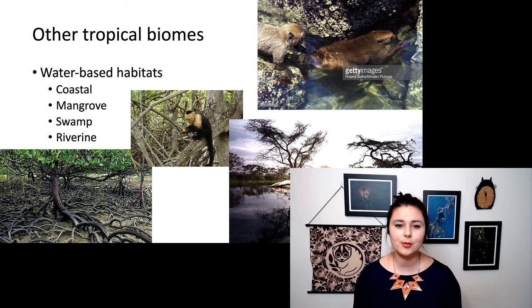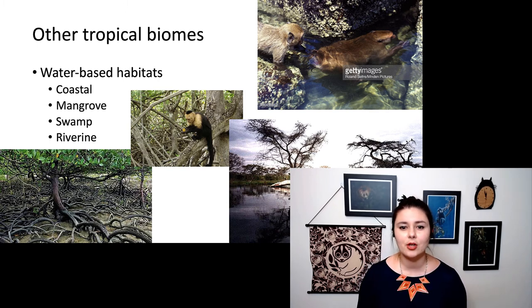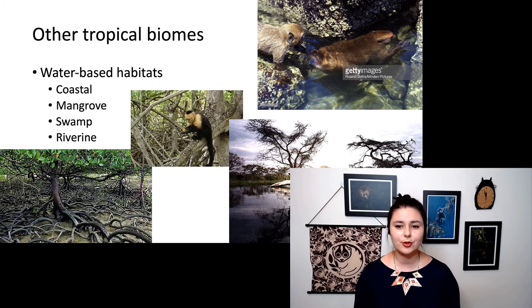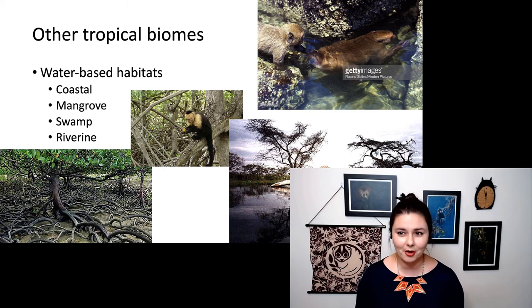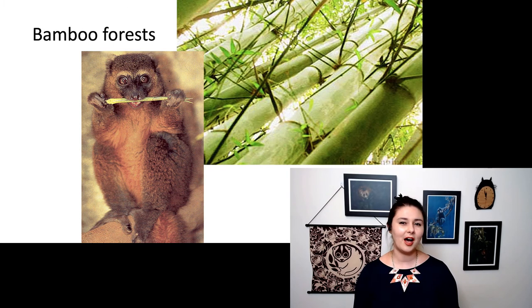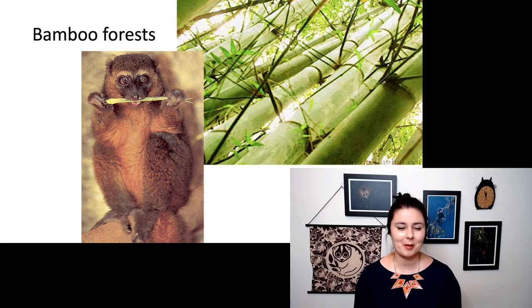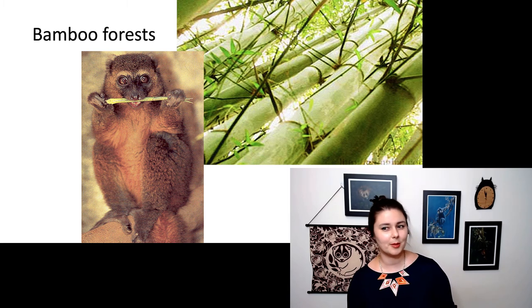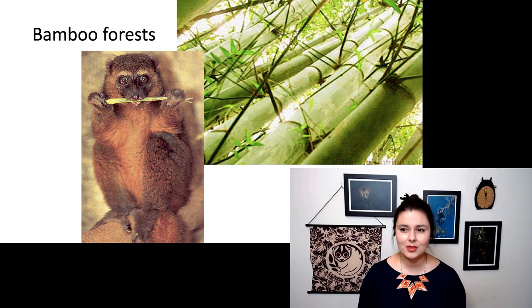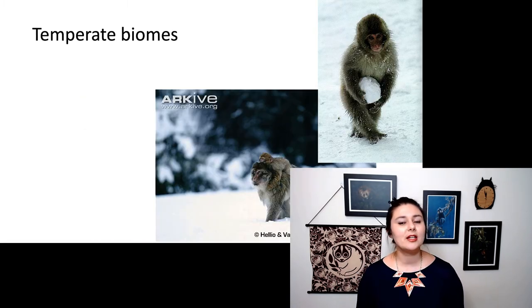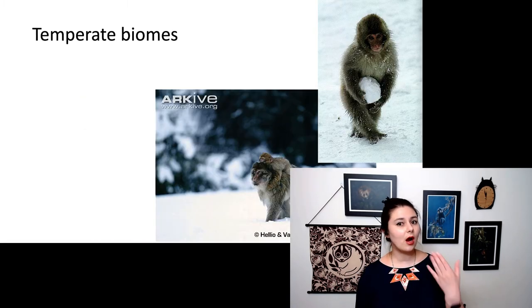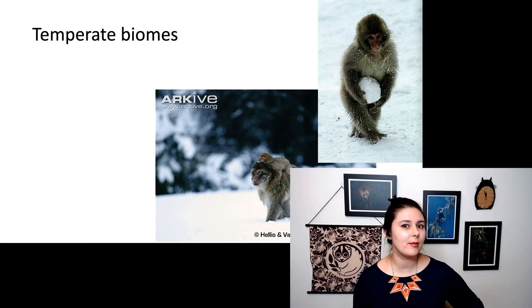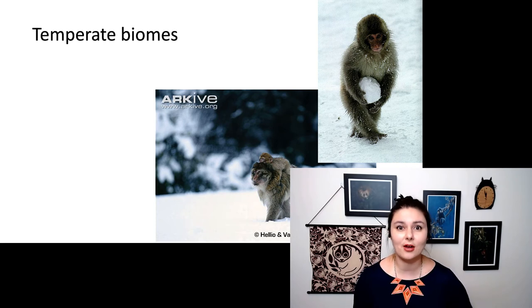A few other tropical biomes include water-based habitats: coastal environments, mangrove swamps, and riverine areas. Here we have a capuchin finding fruit or crabs in a mangrove. There are also some primates that live in bamboo forests, like this adorable little bamboo lemur.